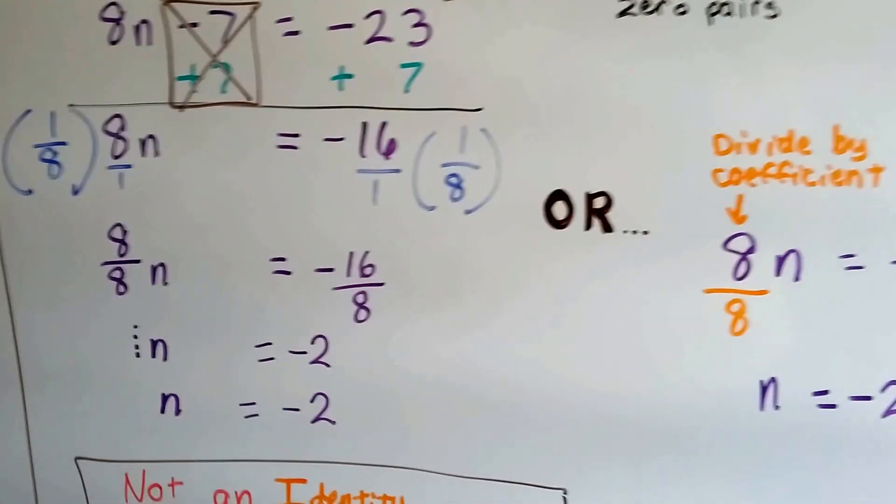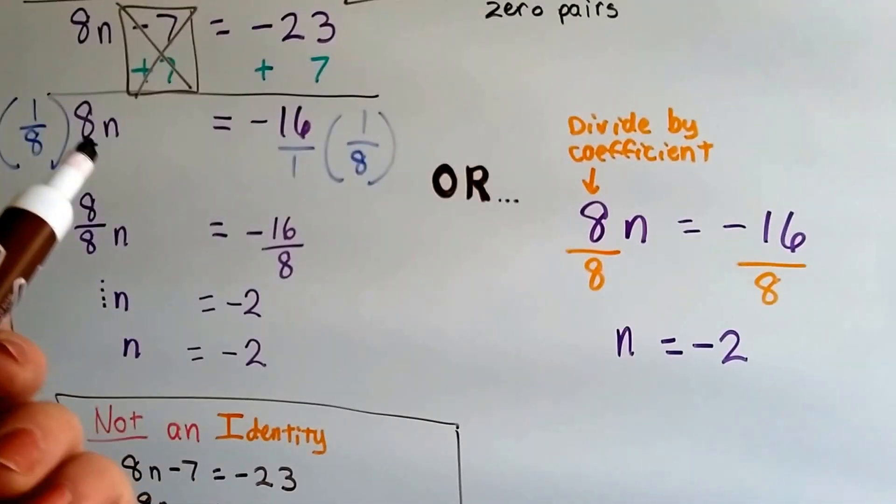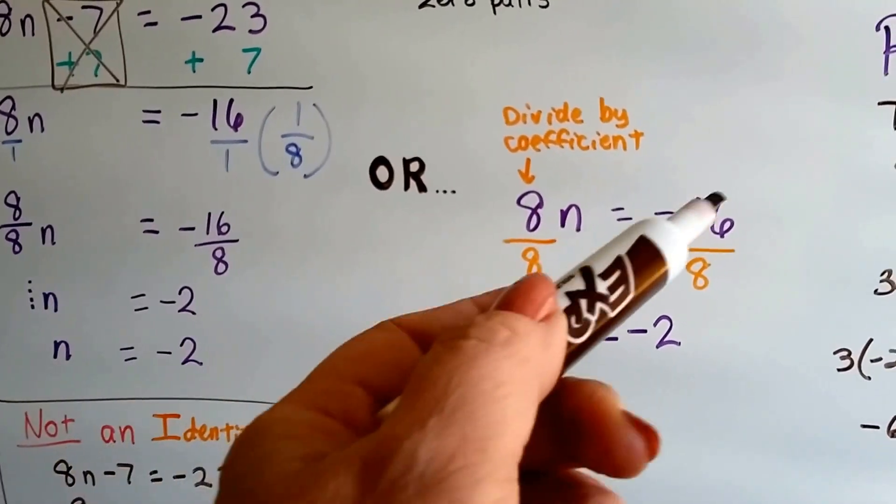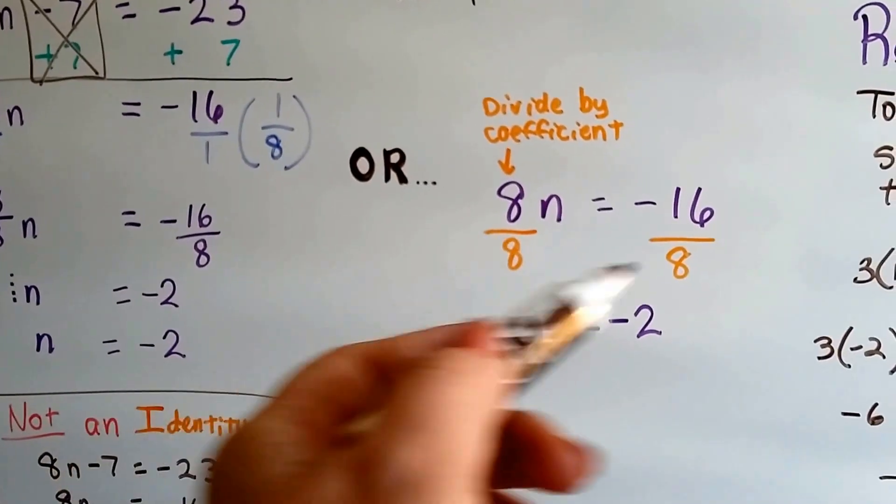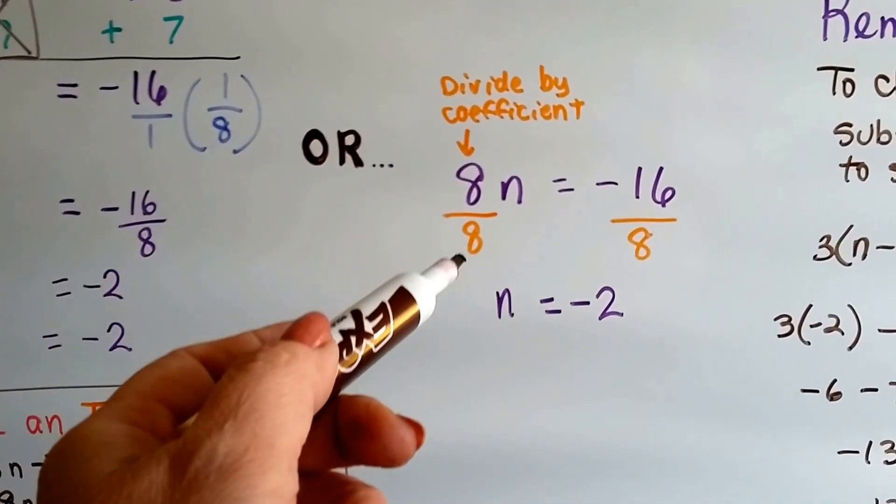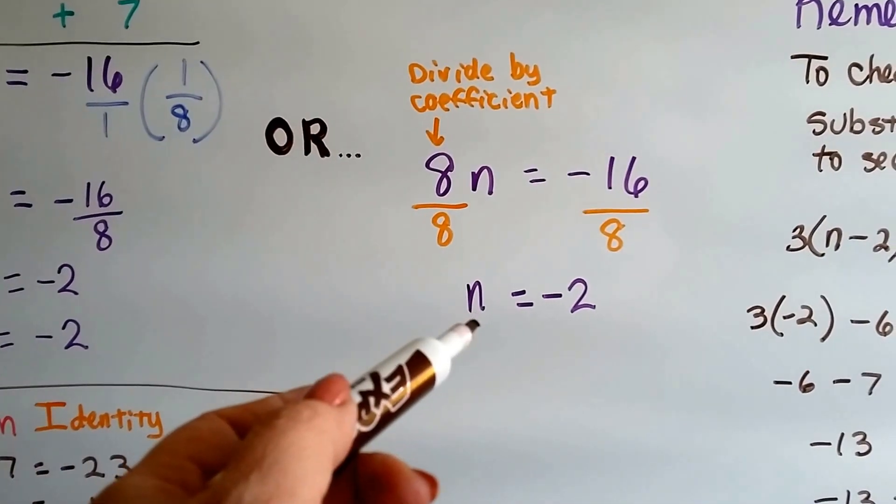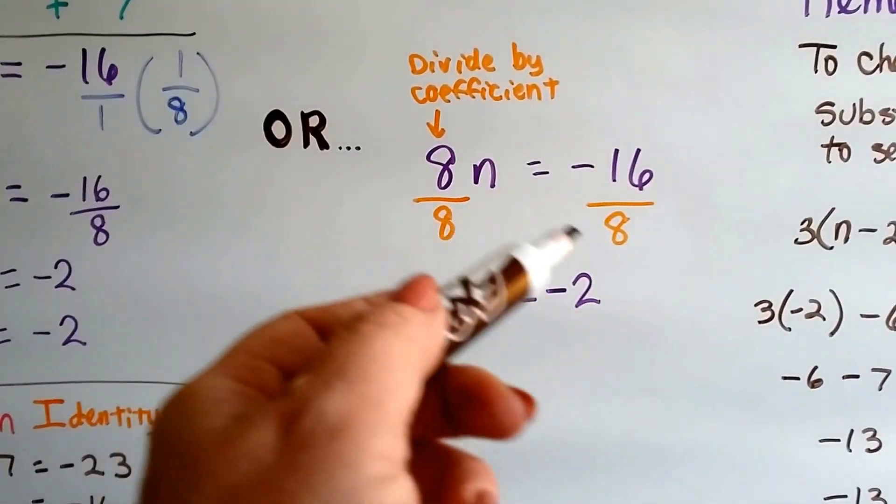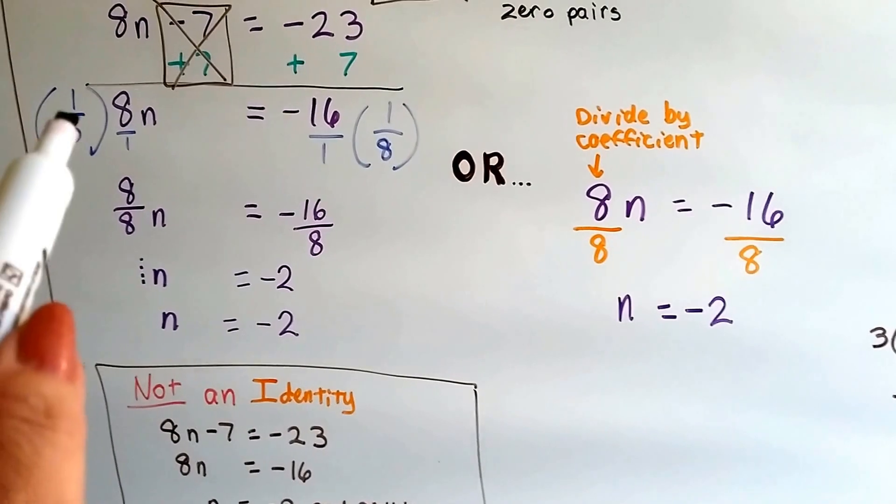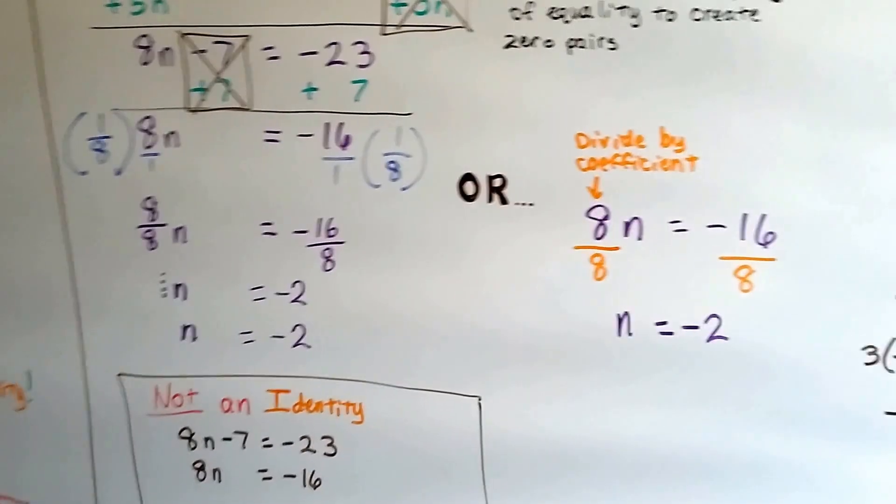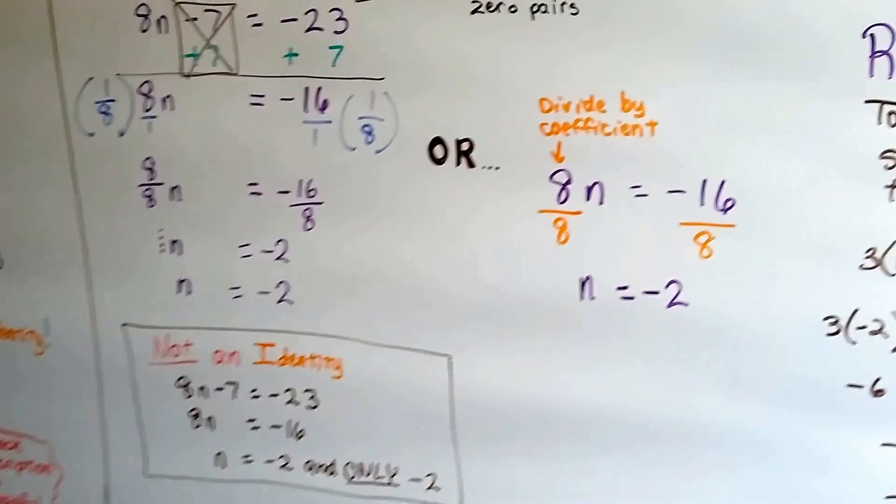We could have made it a lot quicker by just dividing by that coefficient 8. We divide both sides by the 8 and we don't have to do all that fraction multiplication. We just divide both sides by 8. 8 divided by 8 is 1. We get an n on this side, just 1n. And negative 16 divided by 8 is negative 2 and it goes much quicker. We generally like to do this when there's fractions and we're going to do that coming up. It helps us get rid of fractions, in fact.